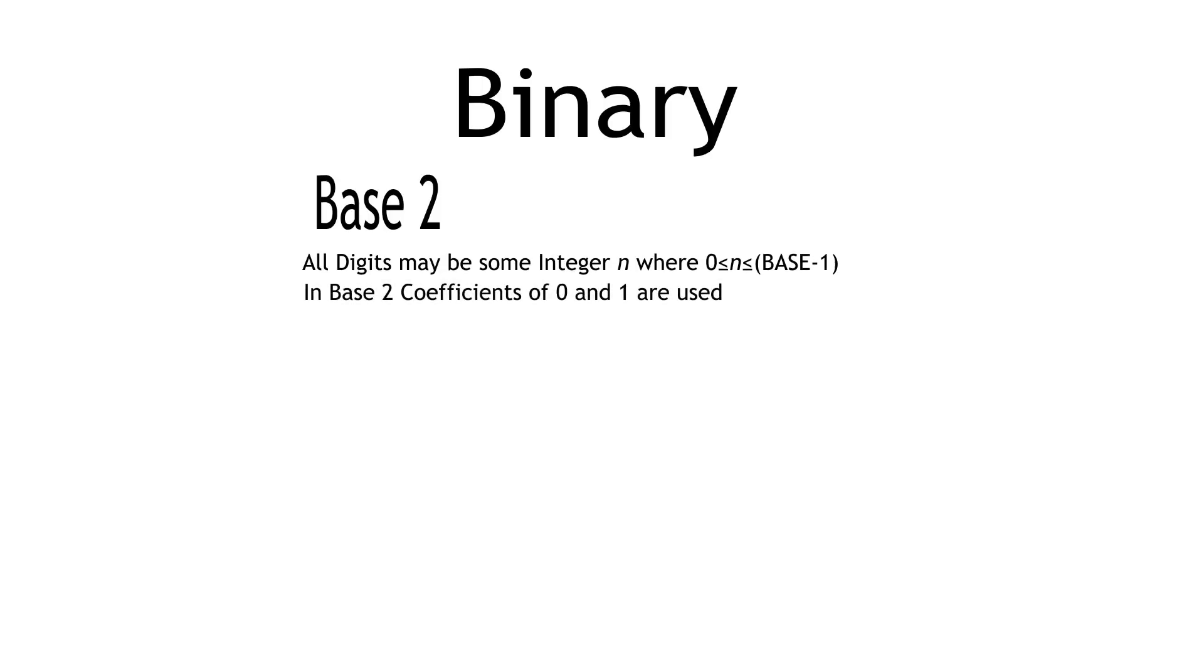In binary, a base 2 system, our coefficients range from 0 to 1. These coefficients are then multiplied by their respective base powers. Because binary is base 2, we use powers of 2 to express every number.